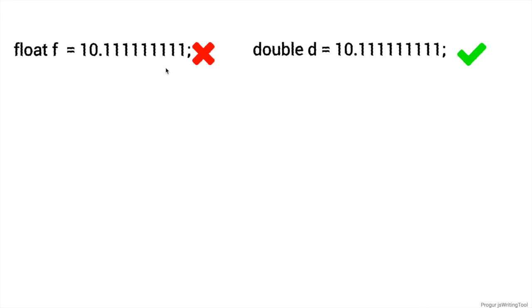If you want to store numbers with a decimal point — like 10.12, 10.11, or 10.9 (nine ones) — the JVM by default stores it as a double. So by default, JVM treats the data type as double. Here, we're storing a decimal number in a float, so JVM sees it as a double value but you're storing it in a float — that's why it gives an error.